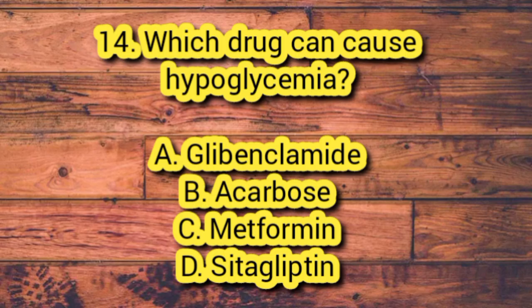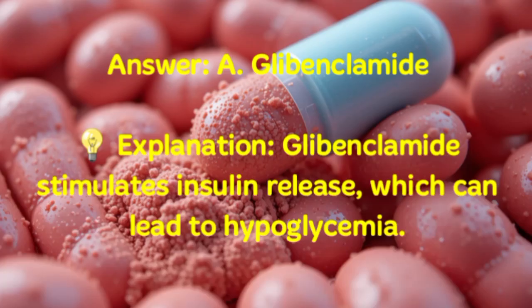Number 14. Which drug can cause hypoglycemia? A. Glibenclamide. B. Acarbose. C. Metformin. D. Sitagliptin. Answer: A. Glibenclamide. Explanation: Glibenclamide stimulates insulin release, which can lead to hypoglycemia.